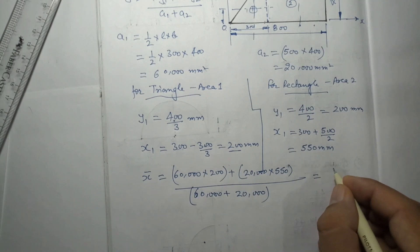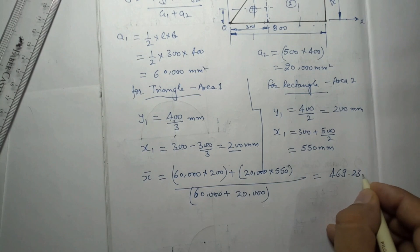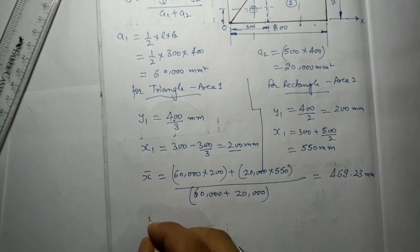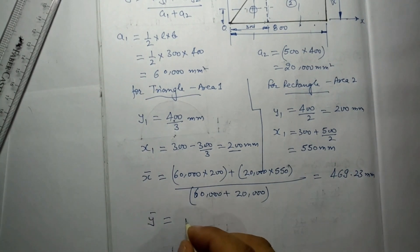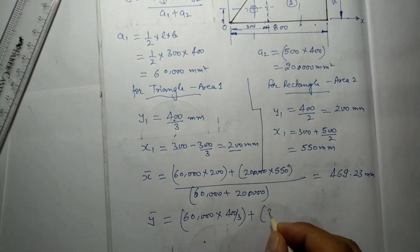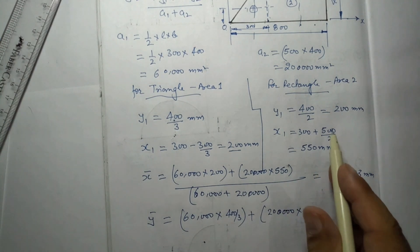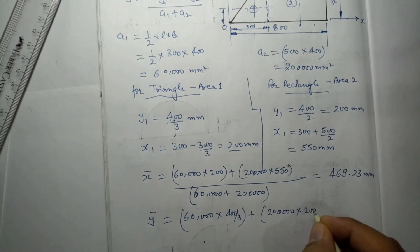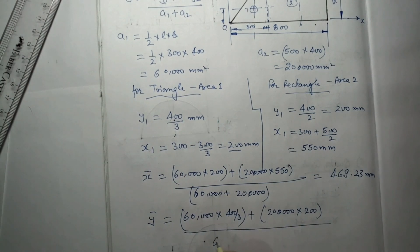Where will be ȳ? ȳ is A1·y1 + A2·y2 divided by A1 + A2. Now y1 we have the value 400/3. So that is 60,000 into 400/3 plus 200,000 into 200, divided by 60,000 plus 200,000. When you calculate, you are getting it 184.67 mm.